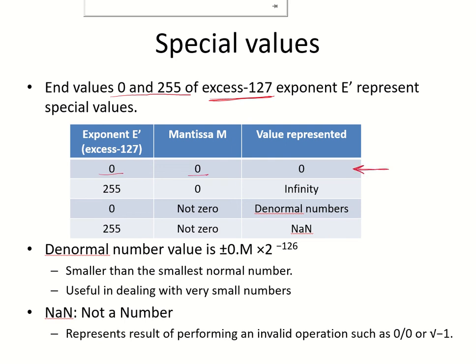If the exponent is 255, if you want to represent a very large number which is beyond the range of the IEEE 754 single precision format, if you want to represent infinity, this is how you will do it. You will set the excess 127 exponent to 255 and the mantissa will be made zero.